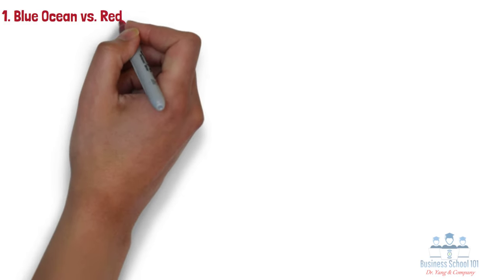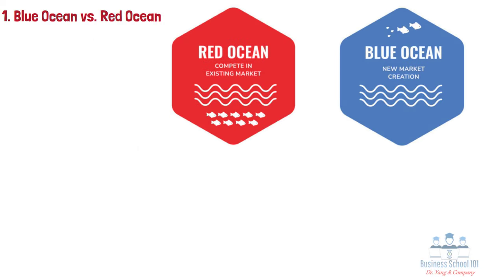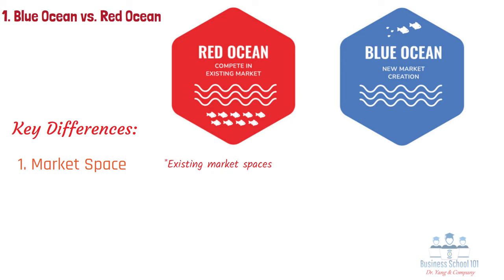Section 1: Blue Ocean vs. Red Ocean. Blue Ocean and Red Ocean are two contrasting business strategies that represent different approaches to competition and market creation. Number 1: Market Space. In a Red Ocean, companies compete within existing market spaces, fighting for market share and customers against established competitors. These markets are typically saturated, with limited growth opportunities. In contrast, in a Blue Ocean, businesses create new, uncontested market spaces by offering innovative products or services that cater to untapped customer needs. This approach allows companies to avoid direct competition and achieve sustainable growth.